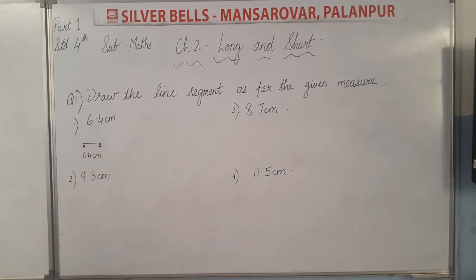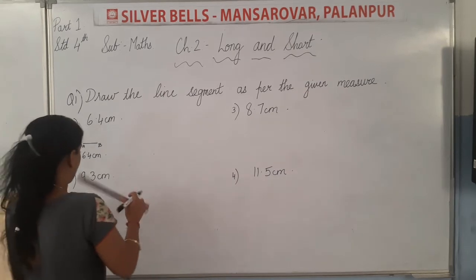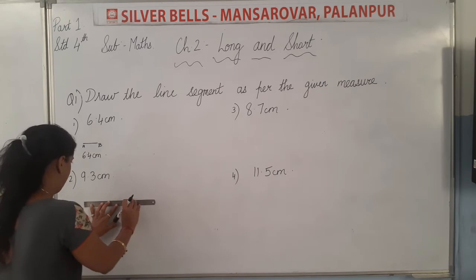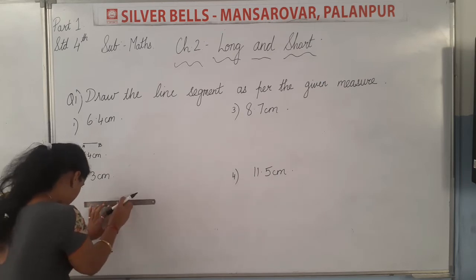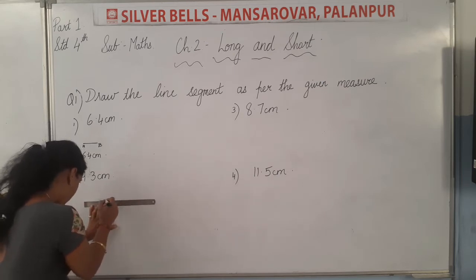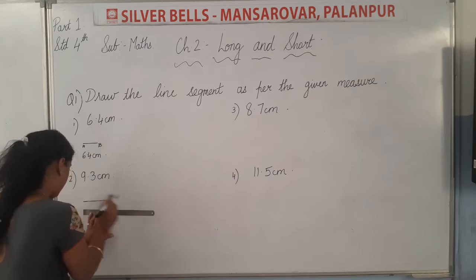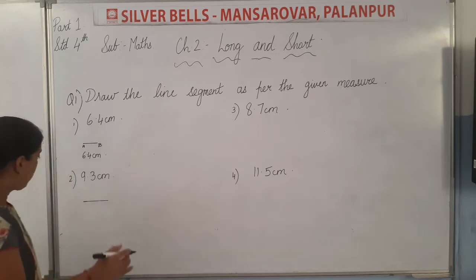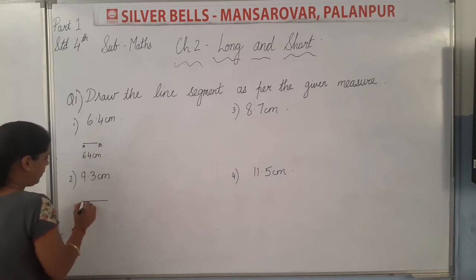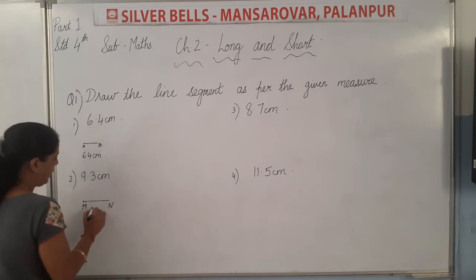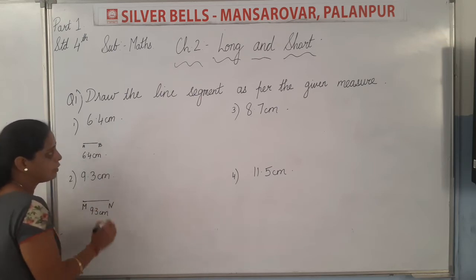Next, 9.3 centimetre. Again, same — you will keep the scale here and then draw to 9.3. After 9, count 3 lines. Then draw and name the points — I have given you M and N. And then write the measurement 9.3 centimetre.